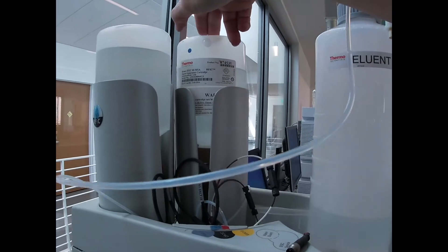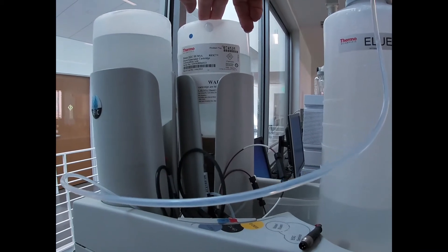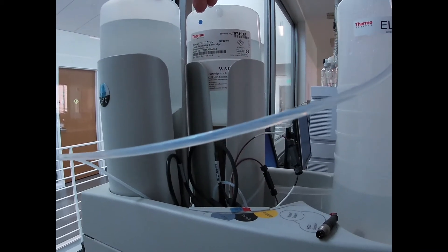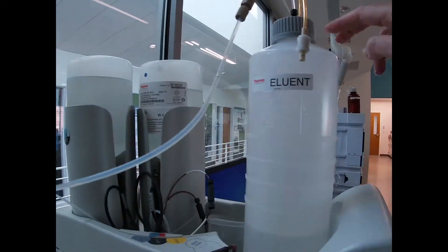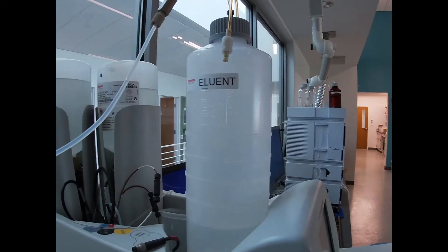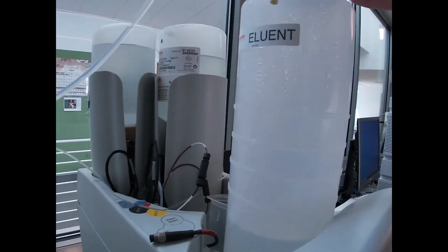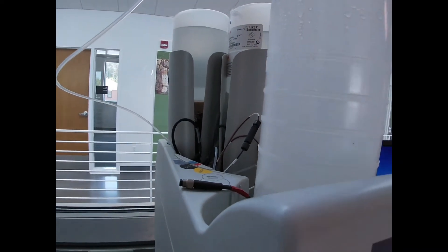This is an MSA cartridge, methyl sulfonic acid. We use that if we're doing cation exchange. This one is potassium hydroxide, so we use this one when we're doing anion exchange. And then this is full of high purity water. It's mixed with our eluent to actually put it at the concentration that we want.